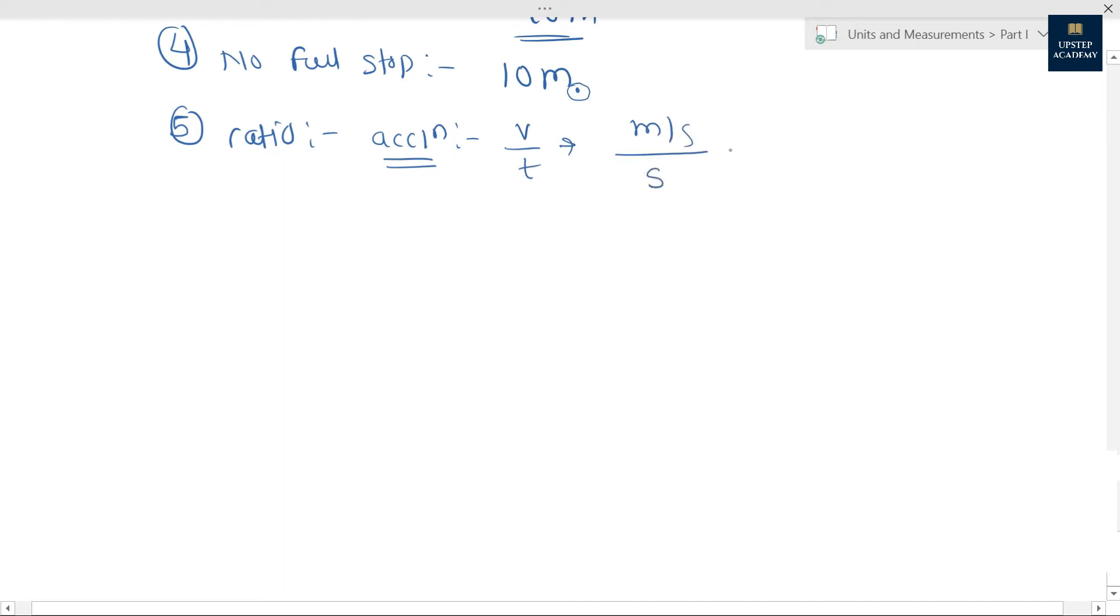So here second comes two times, so meter per second divided by second. This should not be the unit. What should be the unit? Meter per second square, or meter hyphen second raised to minus two. That should be the method of writing, not this.